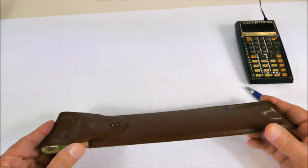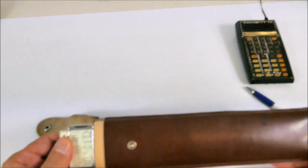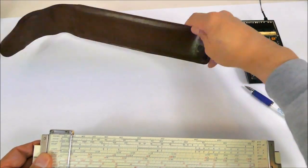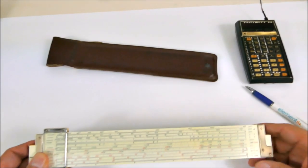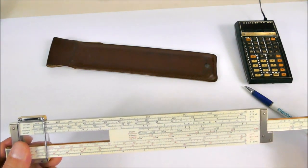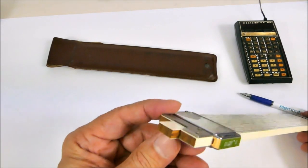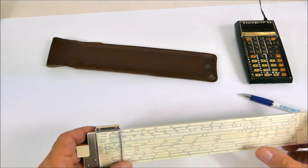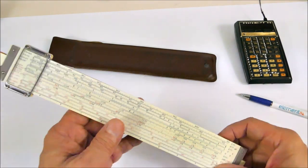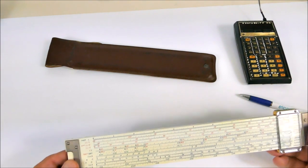This is an old Hemmi slide rule, it's 50 years old, comes in a leather case, and it still slides really nicely. It's got a bamboo construction with a celluloid or plastic face.